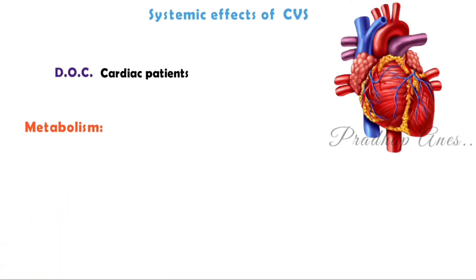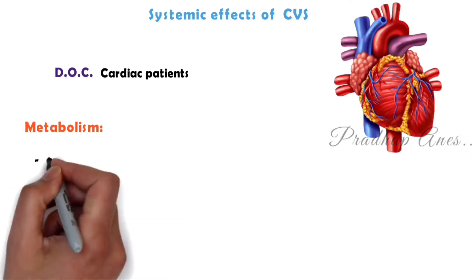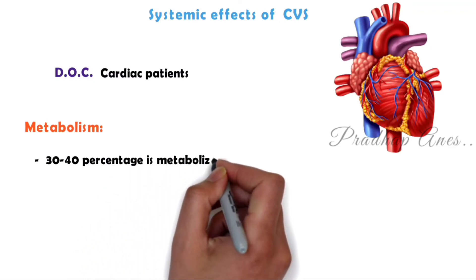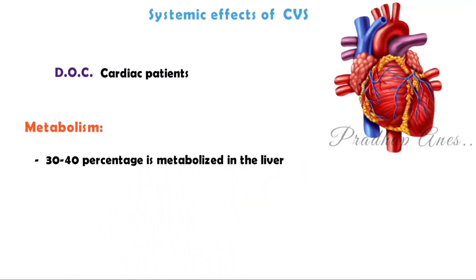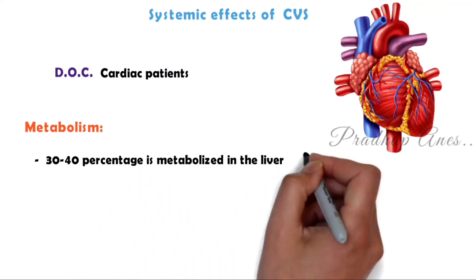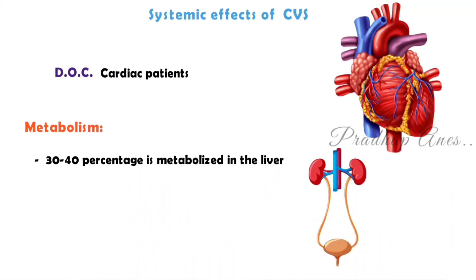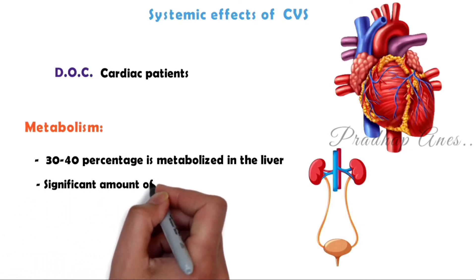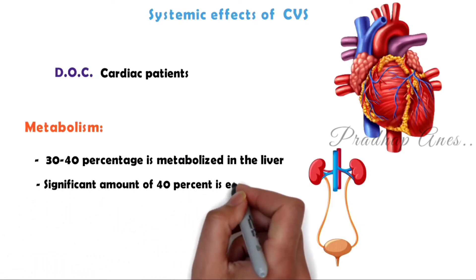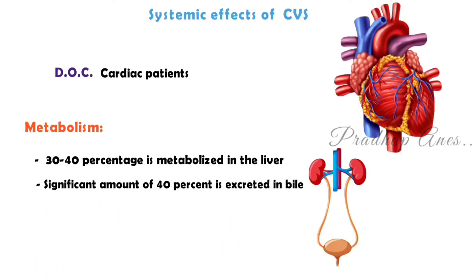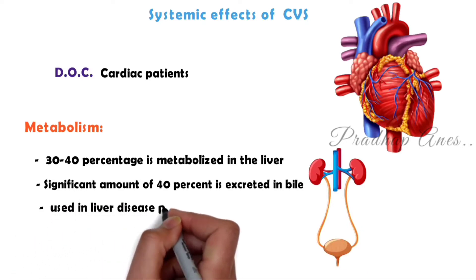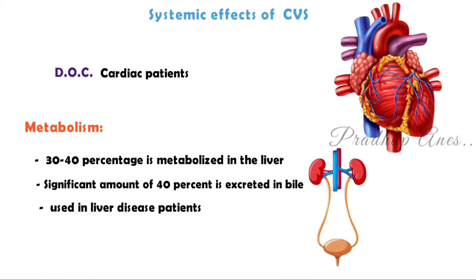Metabolism: 30–40% is metabolized in the liver, only 25% is excreted through the kidneys, and a significant amount of 40% is excreted in bile. Therefore, it can be used in liver disease patients.